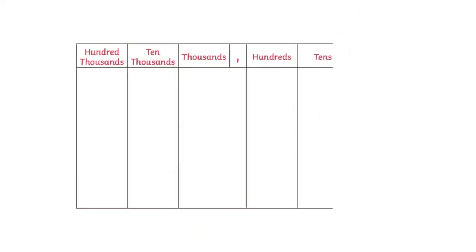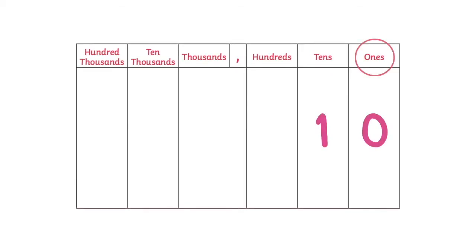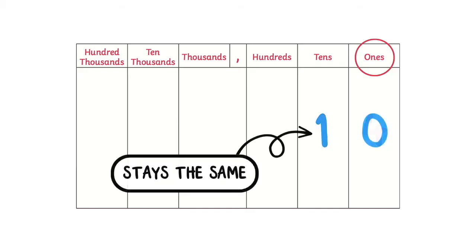This means, when we are rounding to the nearest tenth, remember to look at the ones digit. If the ones digit is zero, one, two, three, or four, then the tens digit stays the same.